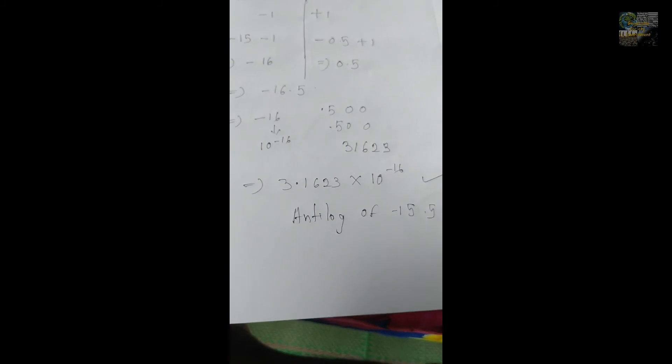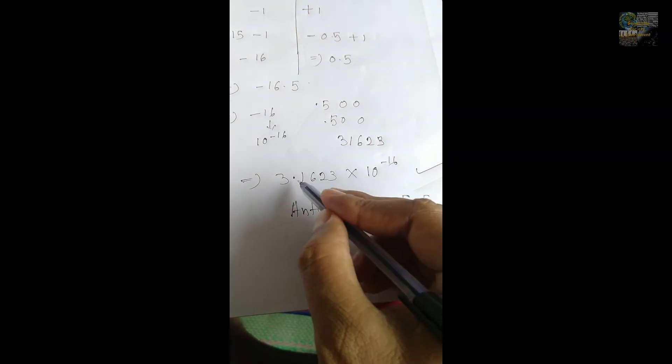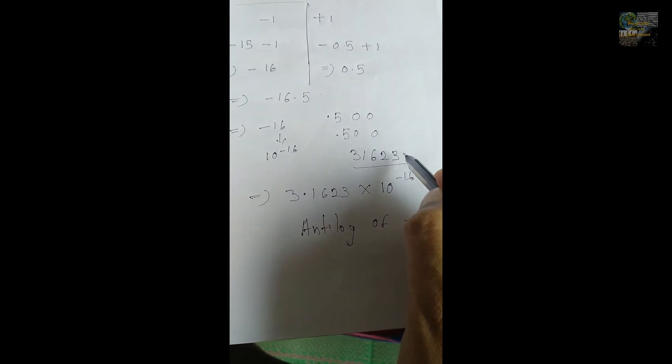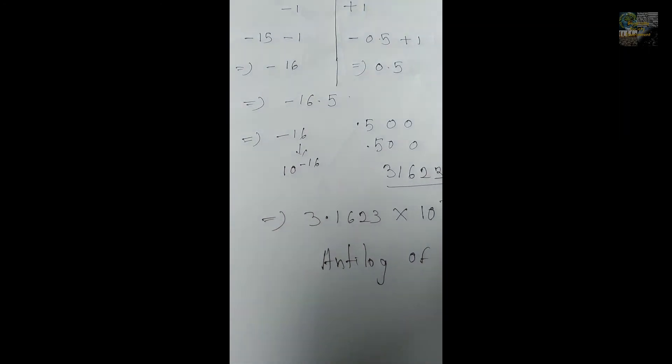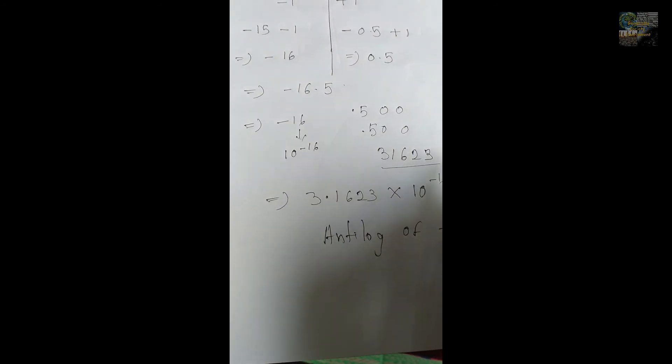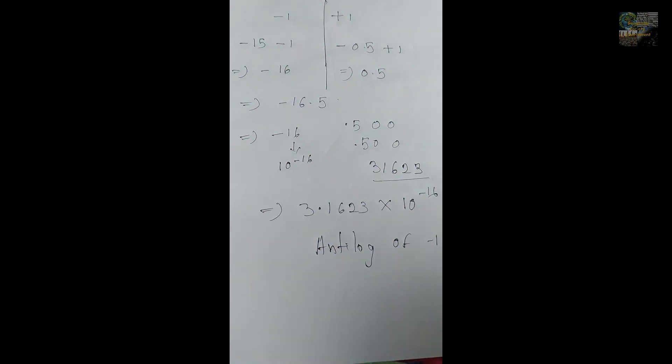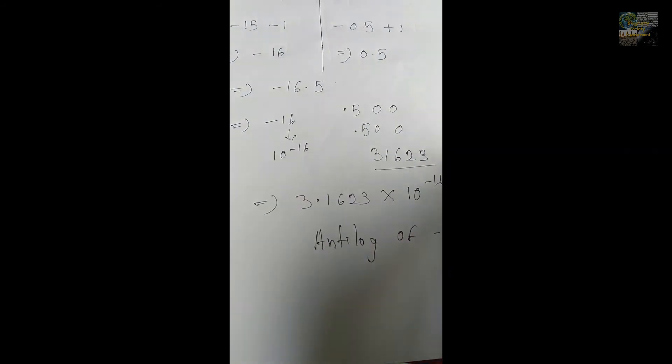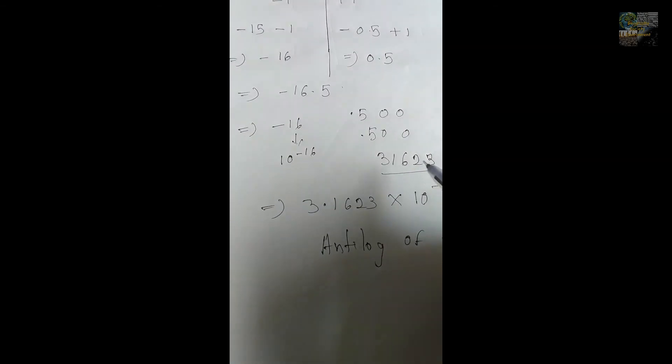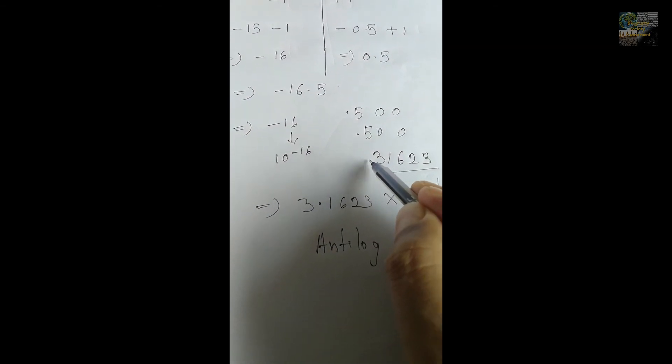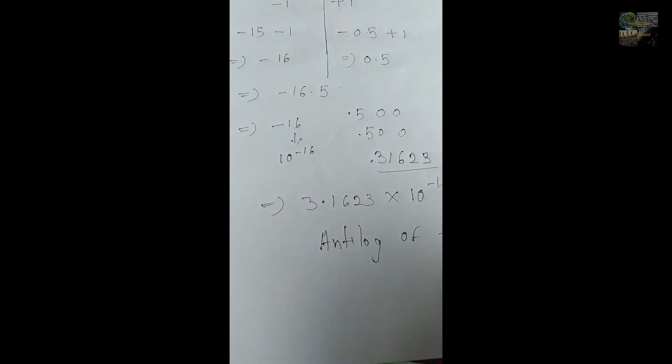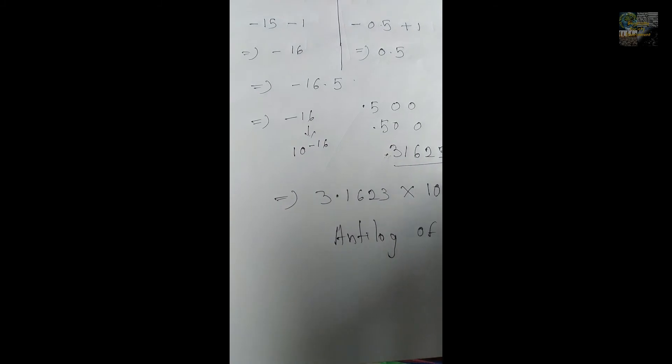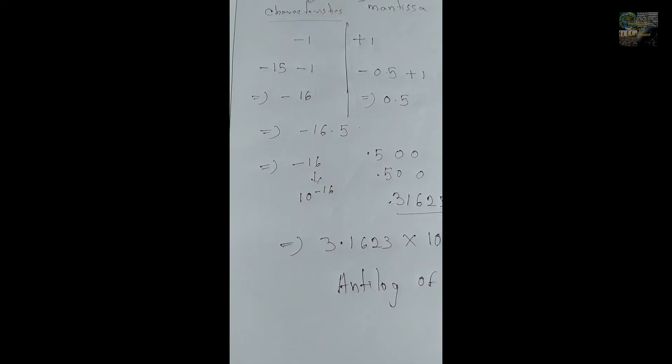You may have a confusion why I have placed a decimal value after 3. After calculating the 3.1623, you know that the mantissa is always lower than 1. That's why in case of any kind of positive antilog value or logarithm value, we used to place the decimal value before 3. But here, the mantissa part is used as a characteristics value.